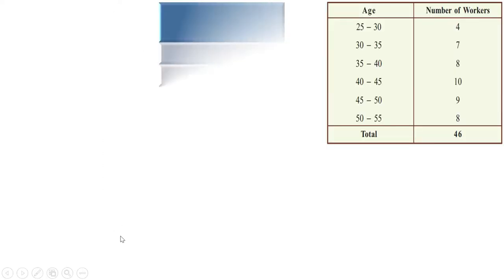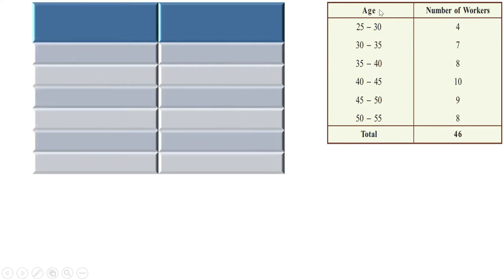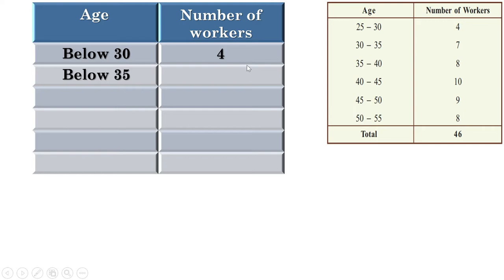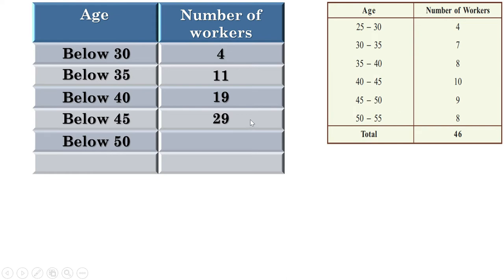First of all, let us prepare a cumulative frequency table. The headings are age and number of workers. Below 30, there are 4 workers. Below 35, there are 4 plus 7 or 11 workers. Below 40, there are 11 plus 8 or 19 workers. Below 45, there are 19 plus 10 or 29 workers. Below 50, there are 29 plus 9 or 38 workers. Below 55, there are 38 plus 8 or 46 workers. Total number of workers is 46.